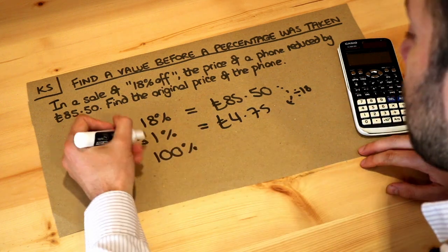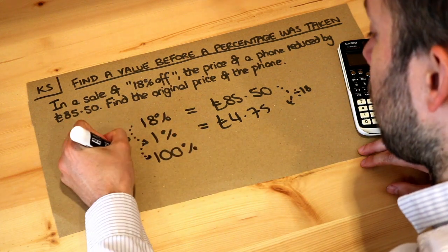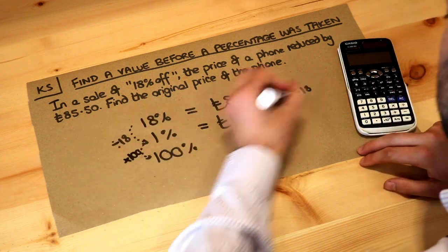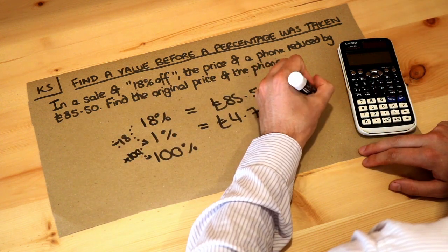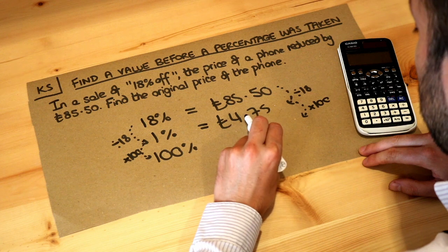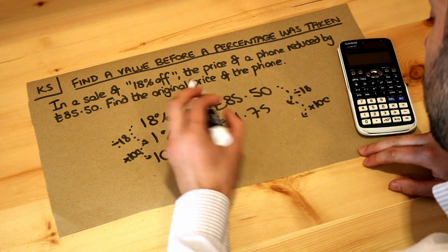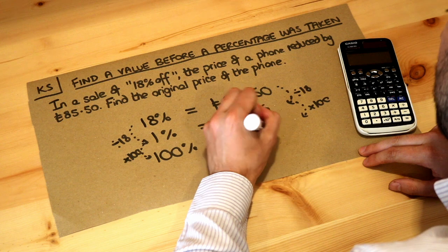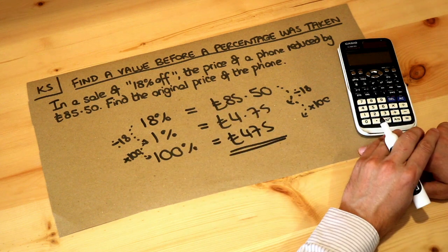And then to get from 1% to 100%, we need to times by 100 because 100 is 100 times bigger than 1. So we times this by 100, and when we do, it moves the decimal point two places, one, two, and we get £475, £575. So that is the final answer.